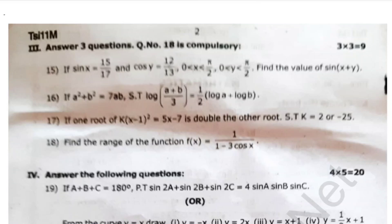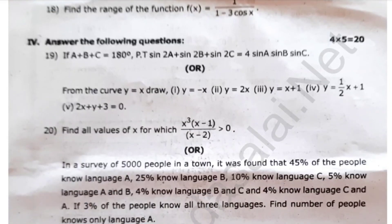Questions 15, 16, 17, and 18. Find the range of the function: 1 divided by 1 minus 3 cos x. Easy — 5 marks.